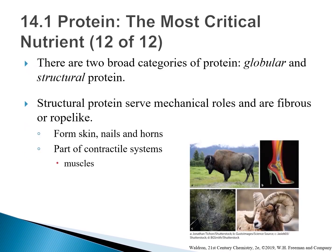Proteins can be divided into two broad categories: globular proteins and structural proteins. Structural proteins do not have a globular shape — instead, they are often fabric or rope-like, and have mechanical roles. In living organisms, structural proteins have protective jobs, such as skin and fingernails, and are also the basis of hard-wearing materials such as horn. They can also do mechanical work, such as in contractile systems — the basis for muscle movement in humans and other animals.